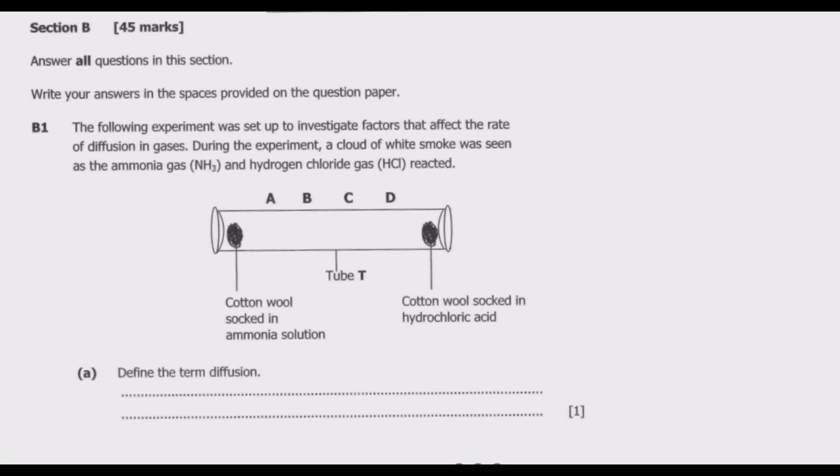Let us start section B by looking at question B1. The following experiment was set up to investigate factors that affect the rate of diffusion in gases. During the experiment, a cloud of white smoke was seen as the ammonia gas and hydrogen chloride gas reacted.